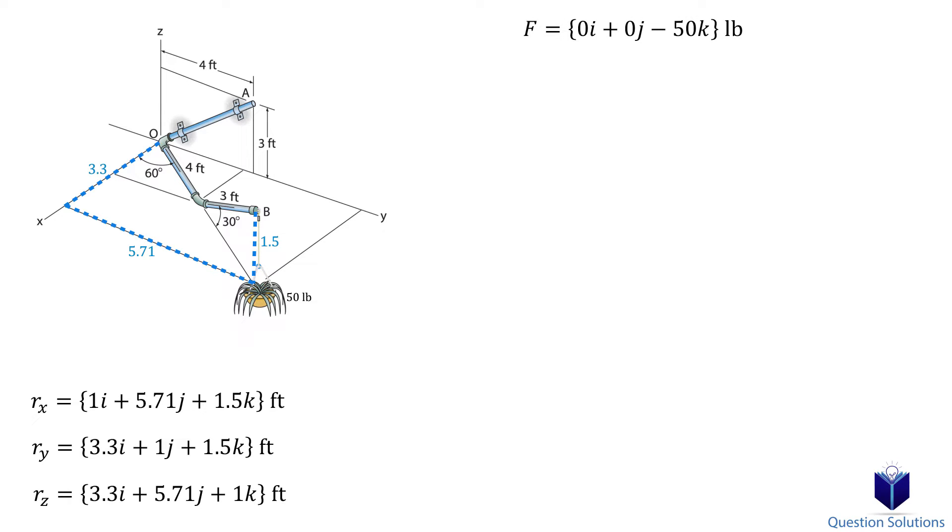Now we need to take triple scalar products for each axis. If you don't know how to do this, I've included a link to solving a triple scalar product step by step. For the x-axis, the unit vector is 1i plus 0j plus 0k. Using this, the position vector and the force, we can solve to find the moment created above the x-axis.